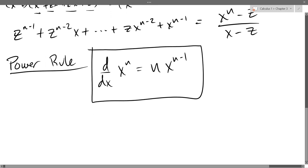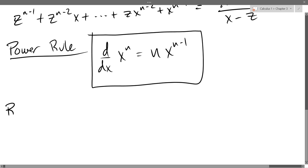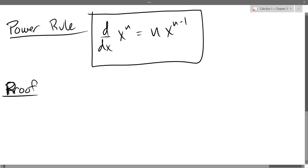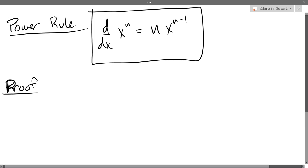So we're going to go and prove this now. Proof, we're going to use, of course, definition of derivative. So f prime of x equals lim h approaches 0, f(x+h) minus f(x) divided by h.